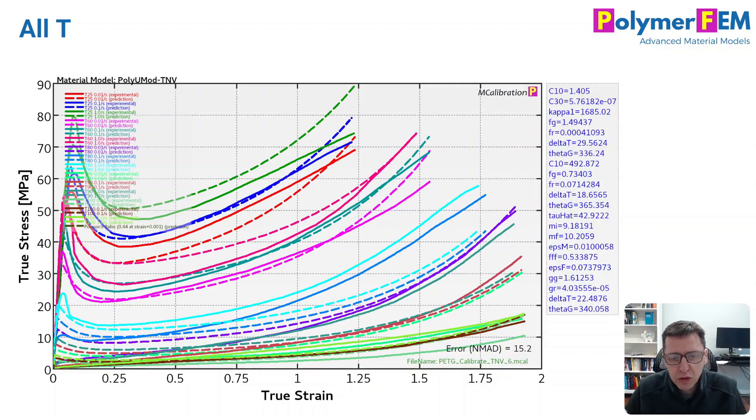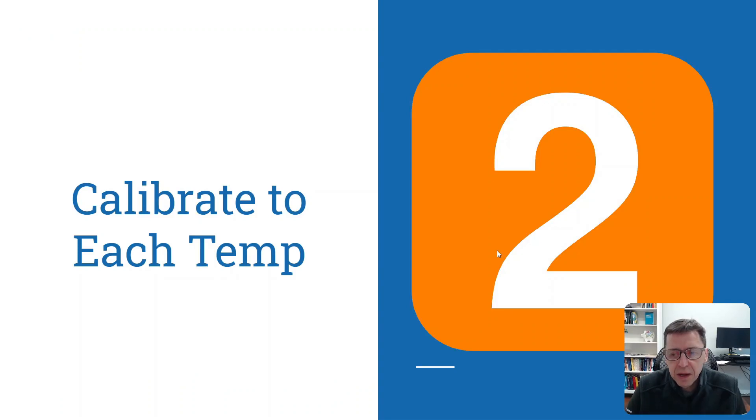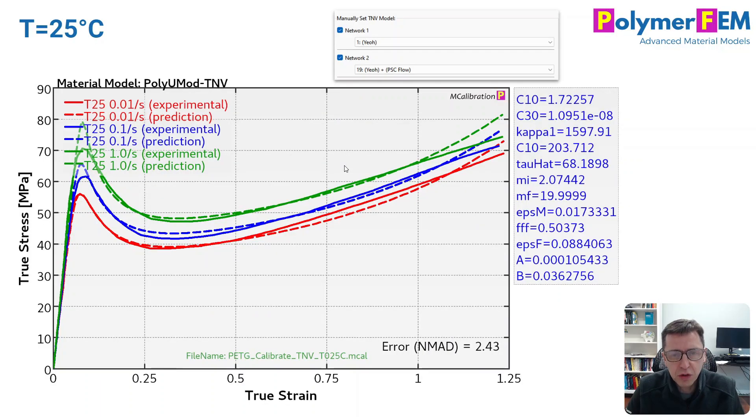Another way to do it is to use a one-at-a-time approach. Here I can calibrate a material model for each temperature at a time, and then in the end I somehow combine them into a temperature-dependent material model. I'm going to start here with the room temperature calibration. In this case, I stick with the TNV model from the PolyUMod library. I use the Yao and PSC flow model for this purpose. I just calibrate it. It looks pretty good. The error is 2.4%, pretty nice.